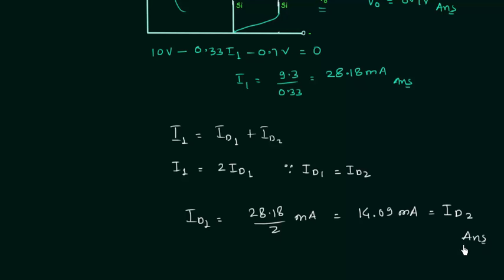So ID1 is equal to 28.18 divided by 2mA and this is equal to 14.09mA and this is also equal to ID2. So these are the second and fourth answers that we had to calculate in this problem.